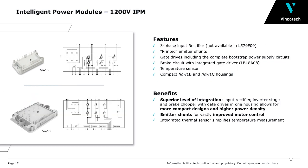VincoTech's portfolio of intelligent modules also comprises the 1200-volt IPMs for three-phase systems. The thick-film technology employed allows a higher level of integration. Three two-channel gate drivers are used to drive the six IGBTs in the motor inverter, while an input rectifier, a thermal sensor, and printed shunt resistors complete the module architecture in Flow 1B. A special mention is reserved for the IPM that additionally integrates a brake chopper with its gate driver for an even higher level of integration.